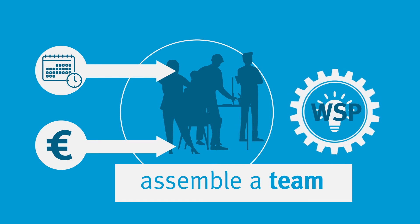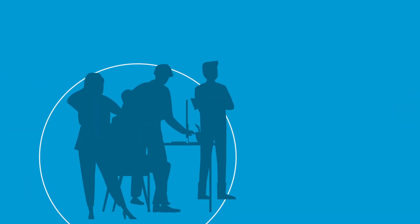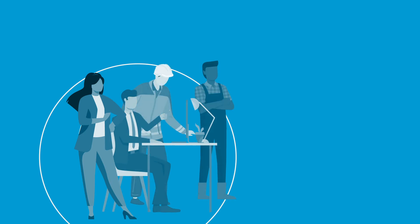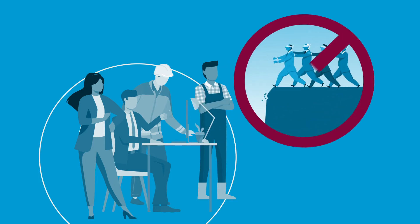A competent WSP team represents different areas of expertise in the water supply system. At least one member must be involved in daily operations. External personnel from the Health Department, an Engineering Office or the Chamber of Agriculture should be involved to avoid operational blindness.